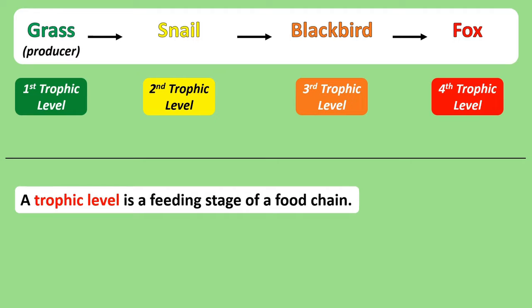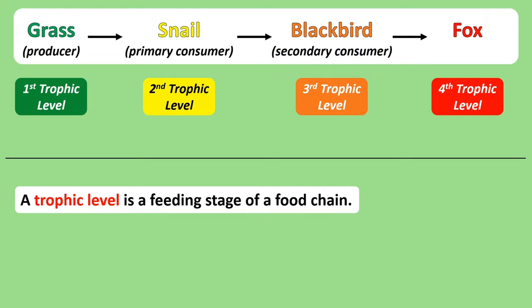The organism in the first trophic level of a food chain is a producer because it can make its own food. The organism in the second trophic level is called the primary consumer because it eats the producer. The organism in the third trophic level is called the secondary consumer, and the final organism in the food chain is known as the top consumer because no other organism eats it.